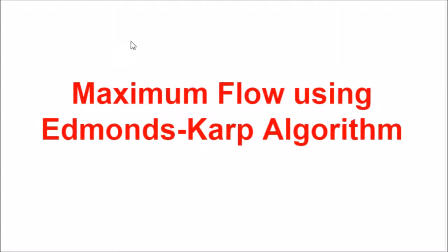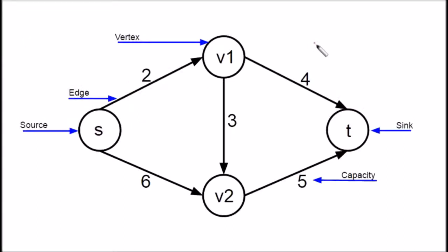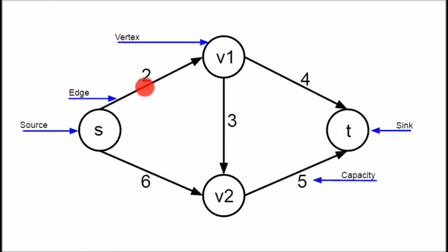Today we'll be talking about finding the maximum flow in a network. To start discussing this, there are some key concepts to run through. This is a directed weighted graph, which in this case can be interpreted and from here on referred to as a flow network. A flow network consists of vertices, in this example v1 and v2, as well as a single vertex known as the source, and a single vertex known as the sink. Each edge represents the direction of flow. Each number on the edge represents the maximum capacity that can be pushed along that edge from one vertex to another.